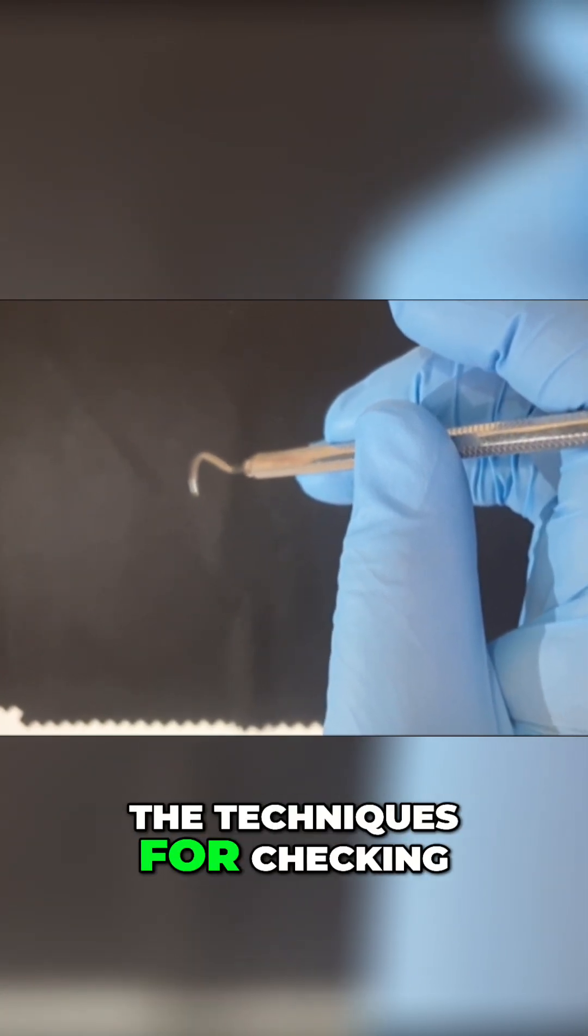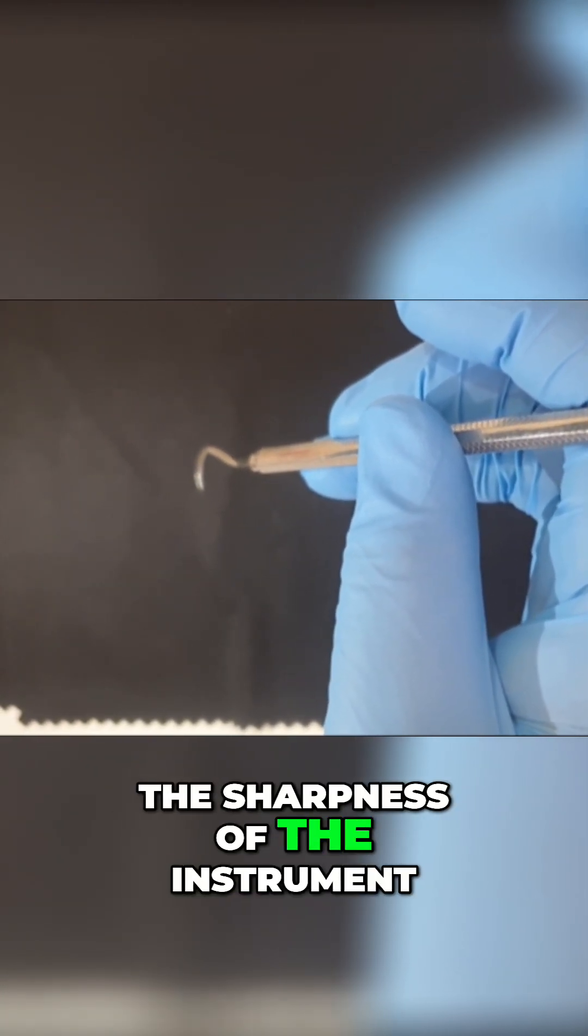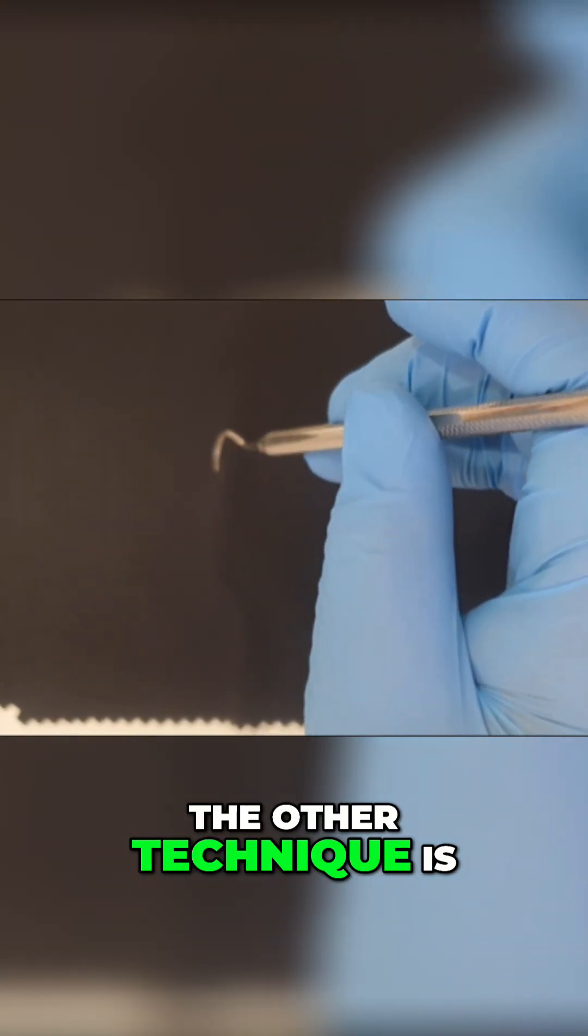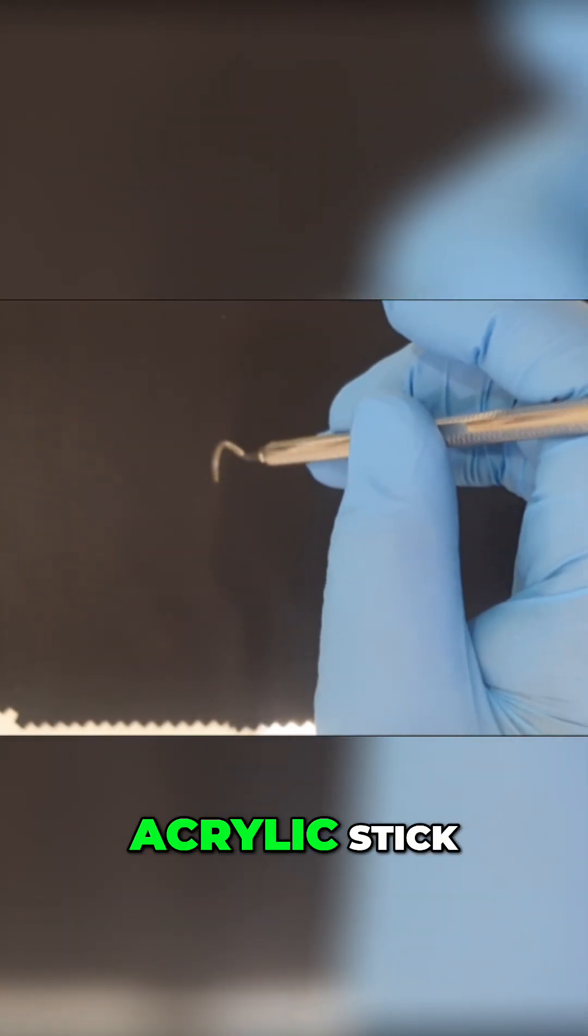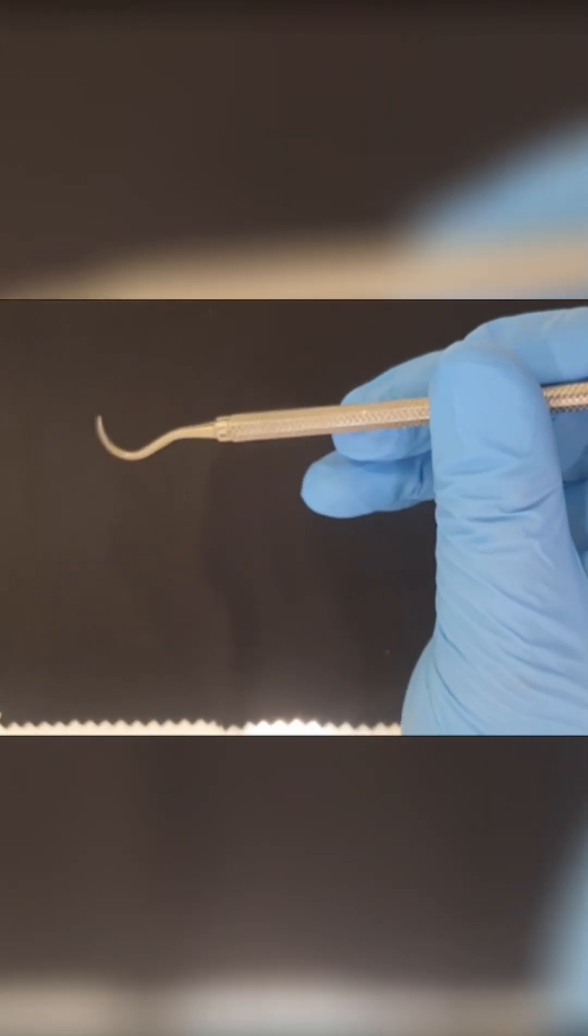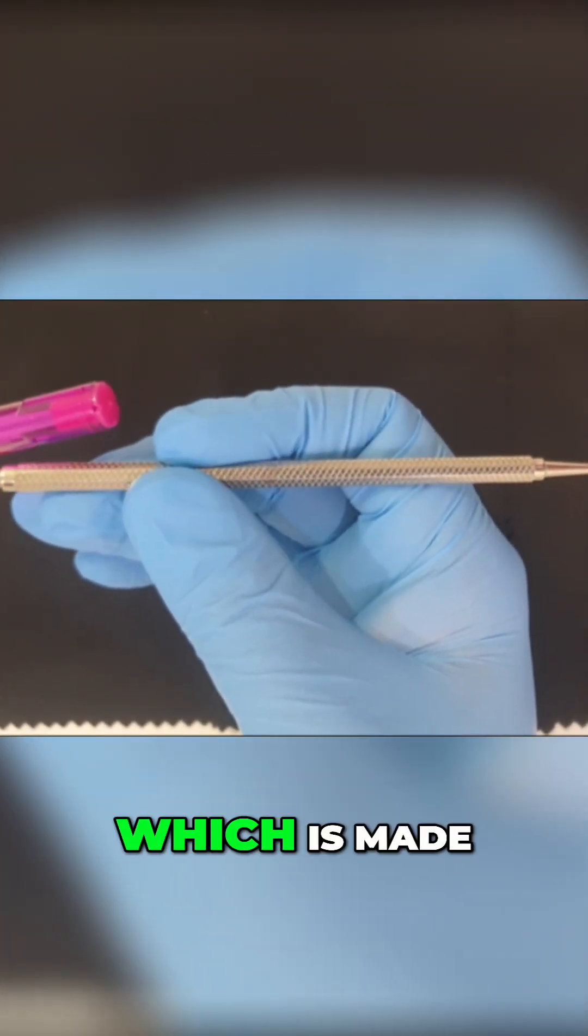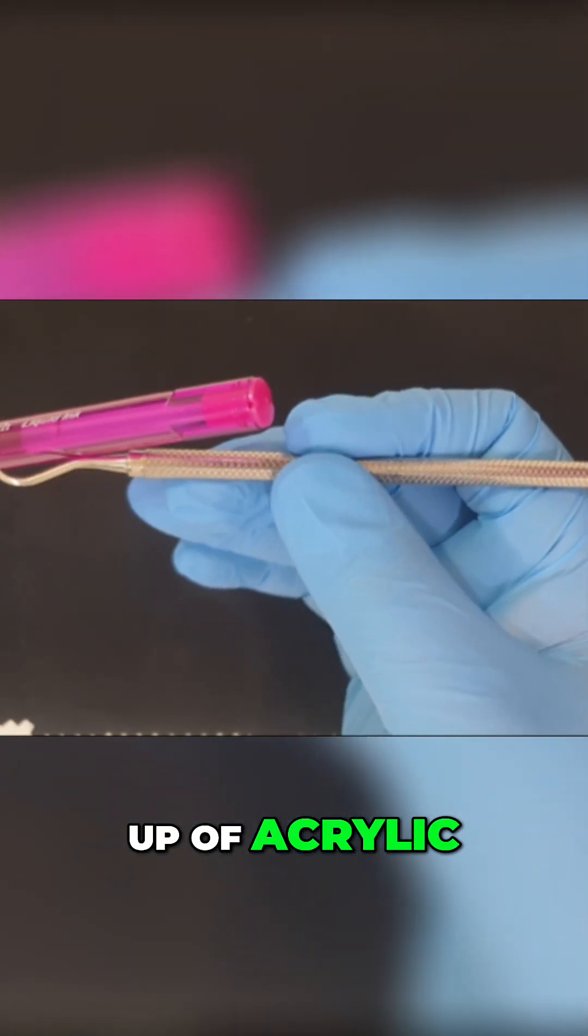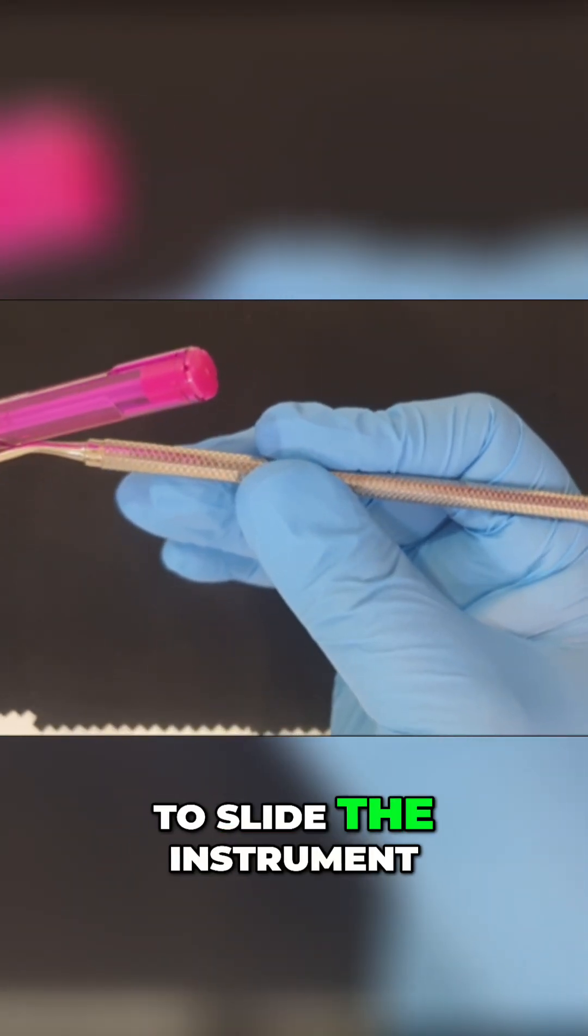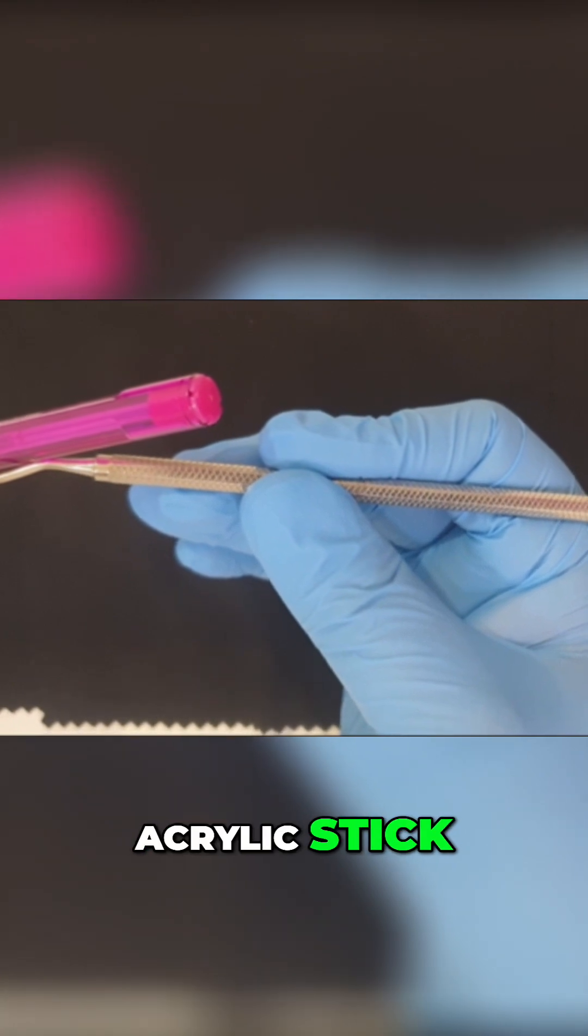This is one technique for checking the sharpness of the instrument. The other technique is you can use an acrylic stick. Since I don't have any acrylic stick, I am using this pen, which is made of acrylic.